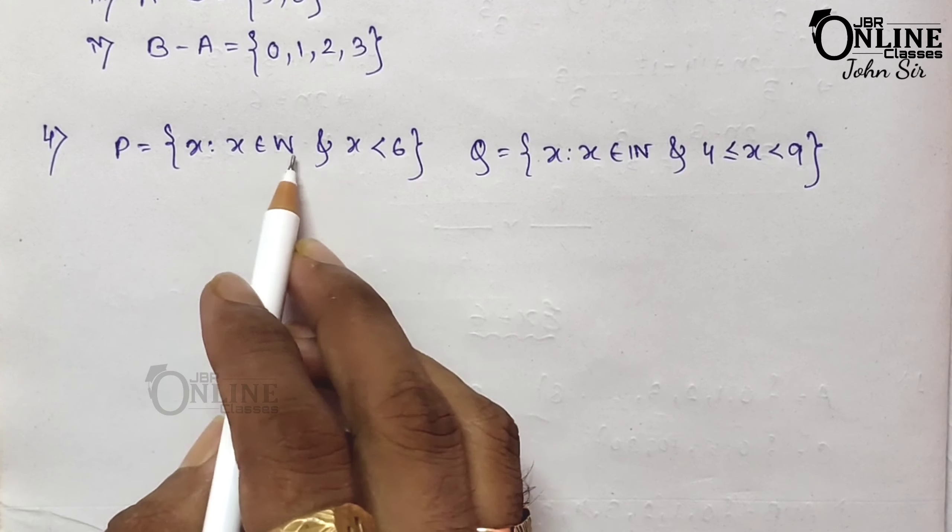Find P union Q: combining both sets gives 0, 1, 2, 3, 4, 5, 6, 7, 8. Next, P intersection Q: the common elements are 4 and 5 only. Then P minus Q: since 4 and 5 are subtracted, the remaining elements are 0, 1, 2, and 3. Next, Q minus P: subtracting 4 and 5 leaves 6, 7, 8.